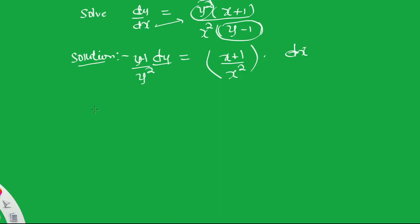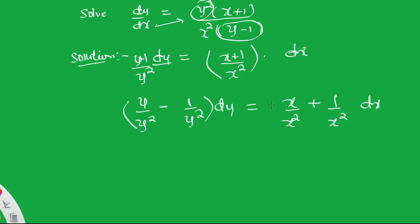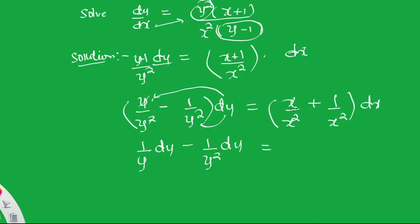Separating: (y/y² − 1/y²) dy = (x/x² + 1/x²) dx, which simplifies to (1/y − 1/y²) dy = (1/x + 1/x²) dx. Now we integrate both sides.